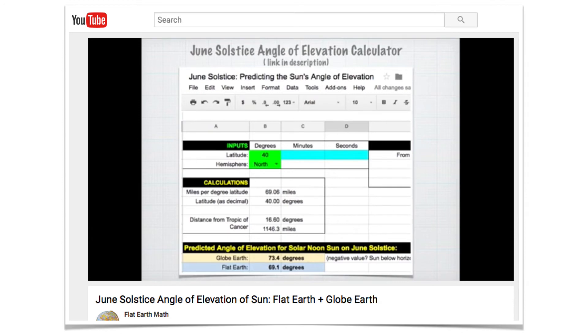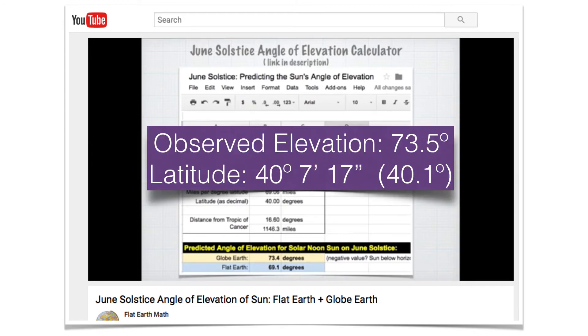So there's an online calculator I've created to help you with these calculations just to sort of automate the process. And the link is in the description. And what we're going to do is we're going to go there now, sort of a live demonstration. And I just want to remind you that my observed angle of elevation was 73.5 degrees, and my latitude of my observation was 47.17 or 40.1. So let's go there now.